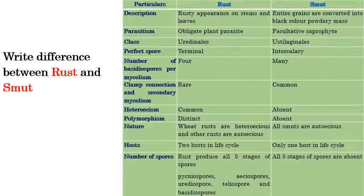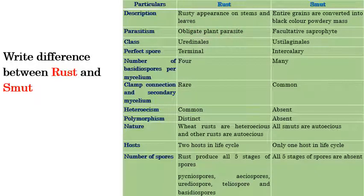We have seen rust and smuts. Now we will see the differences between them. Rust comes under Pucciniomycotina, whereas smut comes under Ustilaginomycotina. For symptoms, rust shows red color pustules on stems and leaves, whereas in smut the entire grains are converted into black color powdery masses. For parasitism, rust is a strictly obligate parasite that cannot be cultured on artificial media, whereas smut is a facultative saproph­yte. Rust comes under Uredinales, whereas smut comes under Ustilaginales.